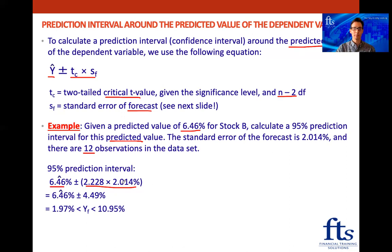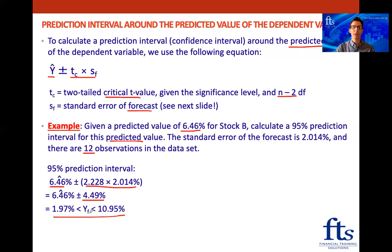Using the given standard error, the critical value multiplied by the standard error comes out to 4.49. Subtracting 4.49 from 6.46 gives us 1.96, and adding 4.49 to 6.46 gives us 10.95. This means we are 95% confident that the dependent variable will be in the range of 1.96 to 10.95.